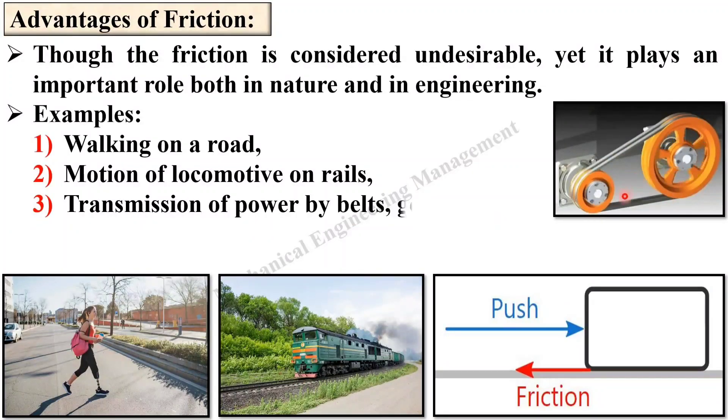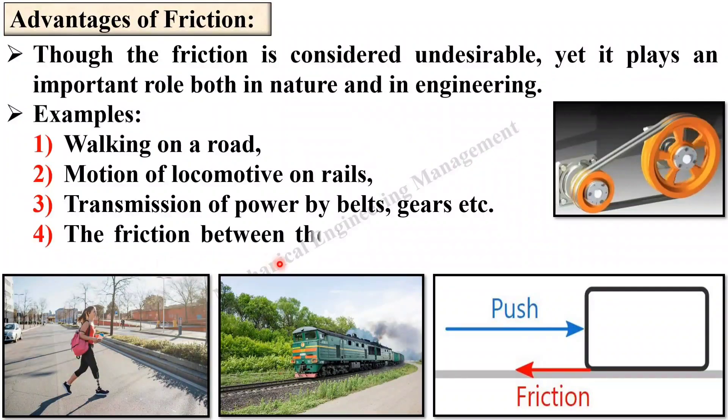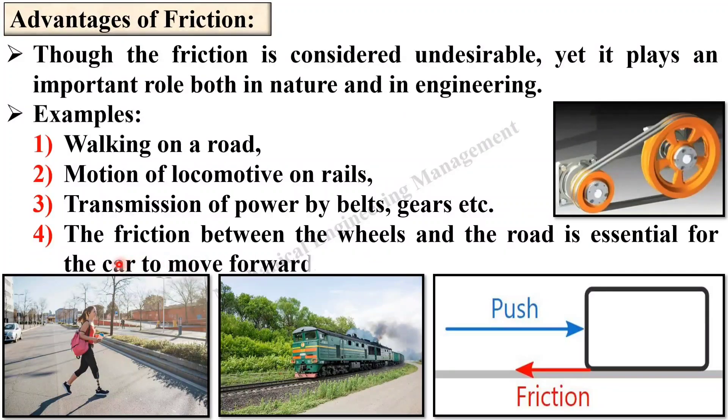Next, transmission of the power by belts, gears etc. Again there is a friction between the pulley surface and the belt and due to this friction force the power can be transmitted otherwise it will slip. Next, the friction between the wheels and the road is essential for the car to move forward and that's why after some times we have to change the tire because due to the wear of the surface of the wheel, the friction is reduced.